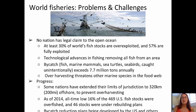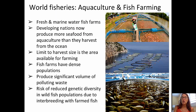Bycatch exceeds 7.5 million tons annually, and overharvesting threatens other marine species in the food web. Some progress is being made though. Some nations have extended their limits of jurisdiction to 200 miles offshore to prevent overharvesting. As of 2014, an all-time low of 16% of the 469 U.S. fish stocks were overfished, and 46 stocks were under rebuilding plans. There are also plans to reduce bycatch. Aquaculture is relatively new and may be helping to subsidize the fishing trade — it can be either freshwater or marine water fish farms.